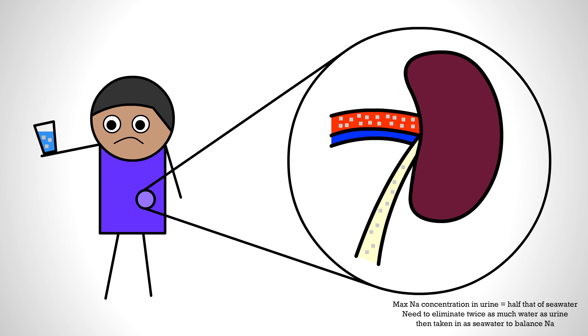Some estimates put the maximum concentration of sodium in our urine at about half that of seawater. So to get rid of all that extra sodium, with there being less sodium per unit volume in urine than in seawater, they have to get rid of more water than we took in. In an effort to regulate sodium concentration, our kidneys dehydrate us even further.